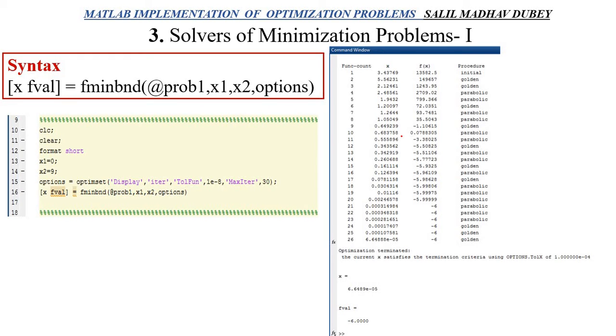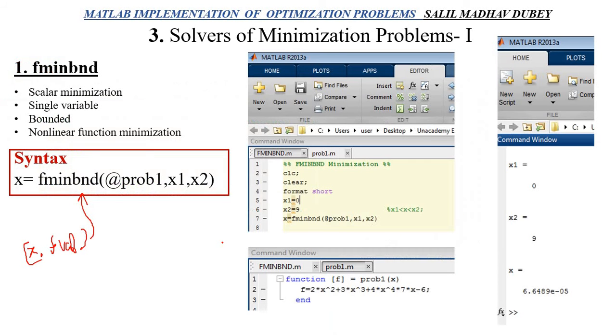In the procedure, you will see there are three different terms: Initial, Golden, and Parabolic. Initial is the first step, so that will be the initial procedure. Golden means golden search method, and parabolic means parabolic interpolation. Both of these are widely used in optimization and MATLAB. If you want a separate video on this, please comment in the comment section. I will try to give you another video. So this is how this whole function works.